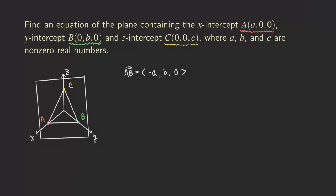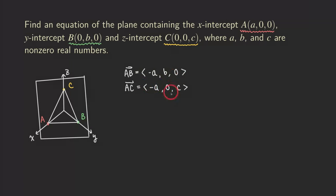We also need another vector, so we use vector AC. We use the coordinates of C subtracting the coordinates of A. So zero minus a gives negative a; then zero; and then c. So vector AC = (-a, 0, c).